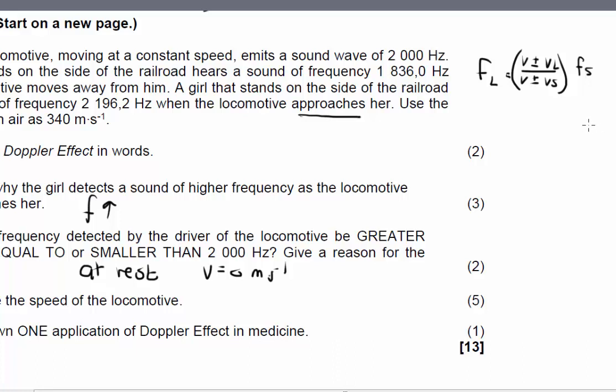I'm going to use the frequency of 1836 to solve this question. So the frequency of the listener, 1836, is going to be equal to, when a locomotive moves away, remember that the minus is above the line. So it will be 340 minus 0 over 340 plus the velocity of our source. I'm going to multiply this with the frequency of the source, which was given as 2000. When we now calculate the velocity of the source, it should give you a value of 30.37 meters per second.